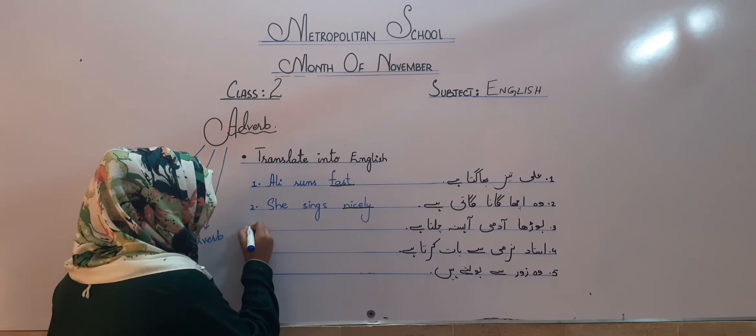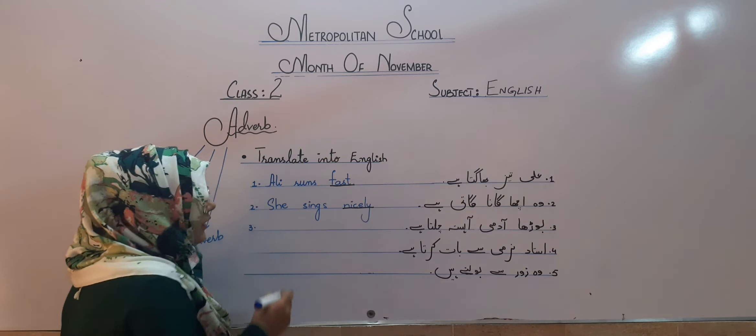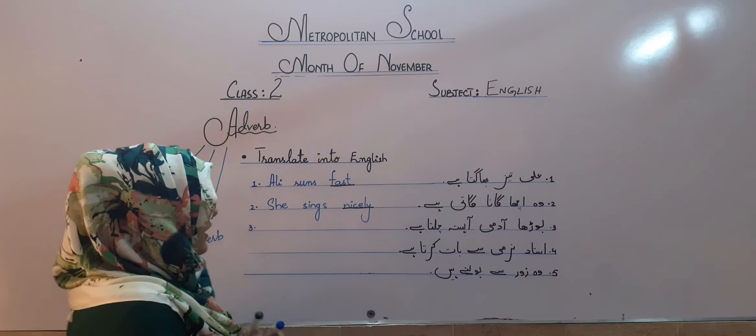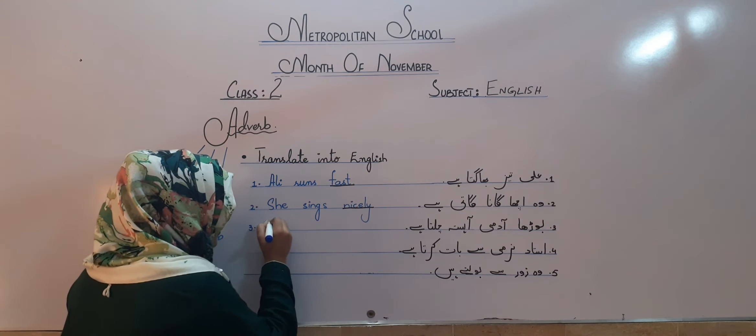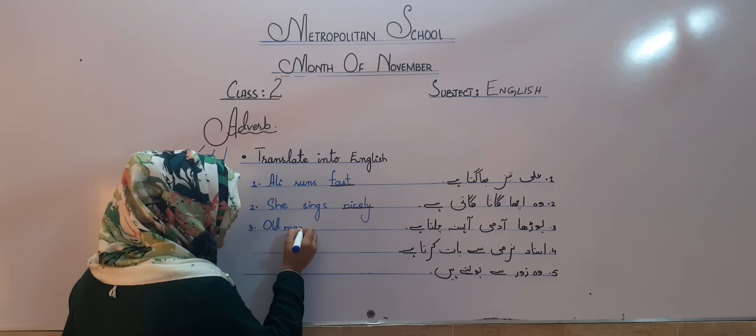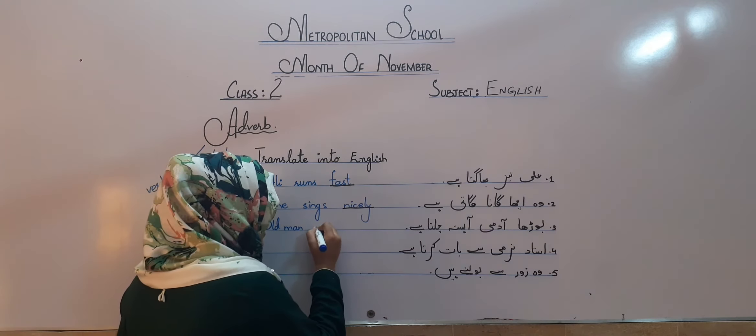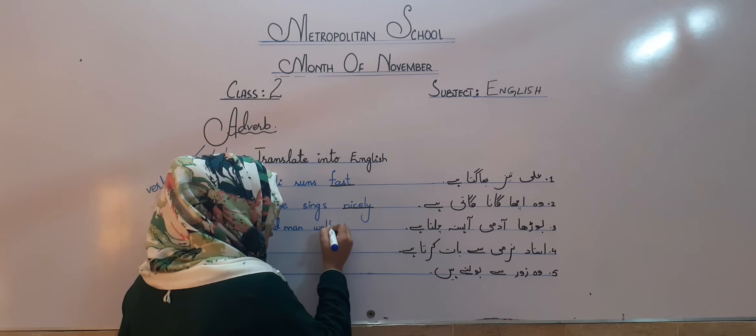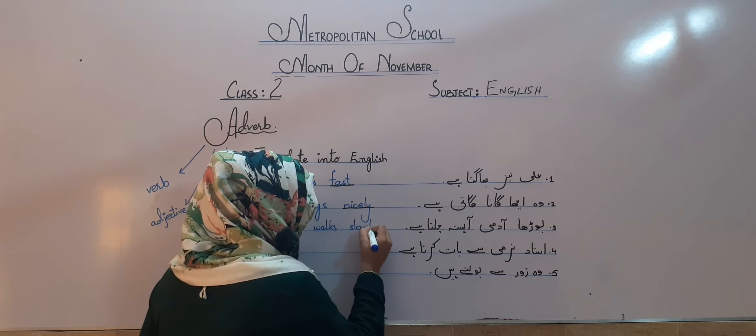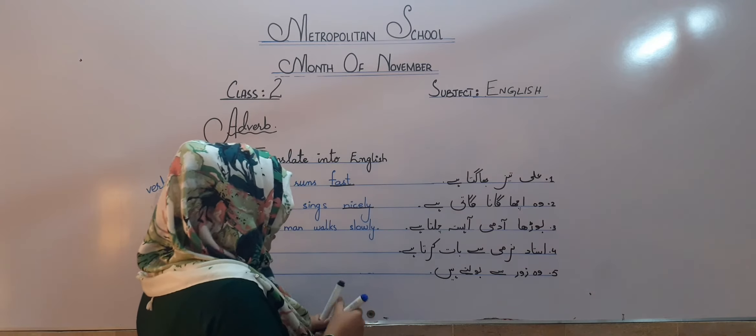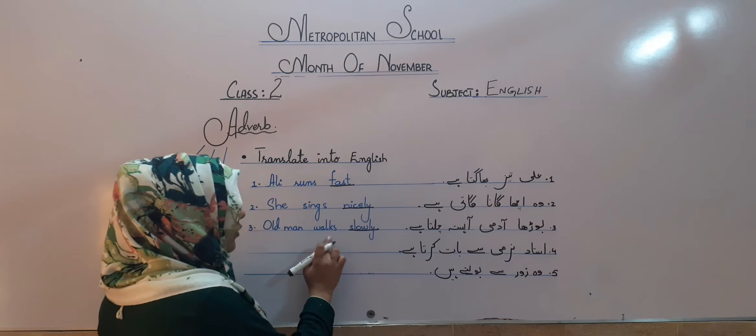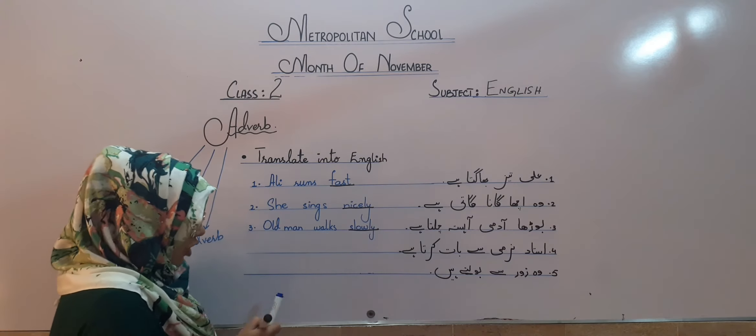Okay students, now we are going to start number three. It is, bura aadmi aasta chalta hai. First, the subject which is old man. What is he doing? Walks slowly. Here, the word slowly is describing how the old man is walking.